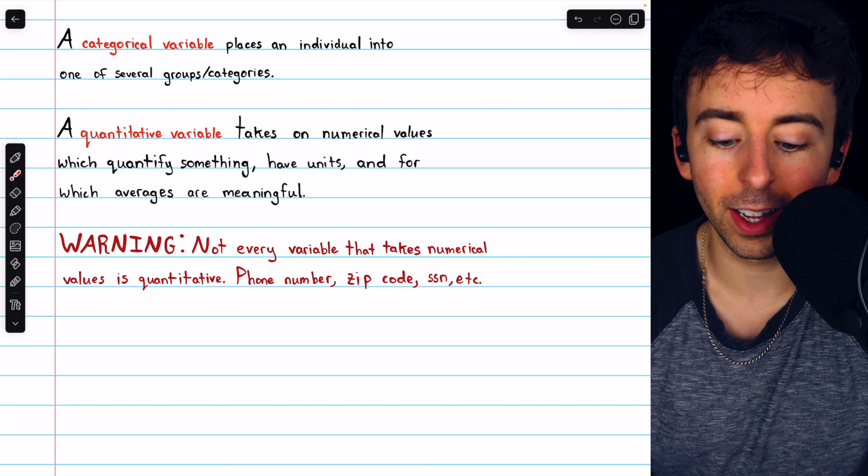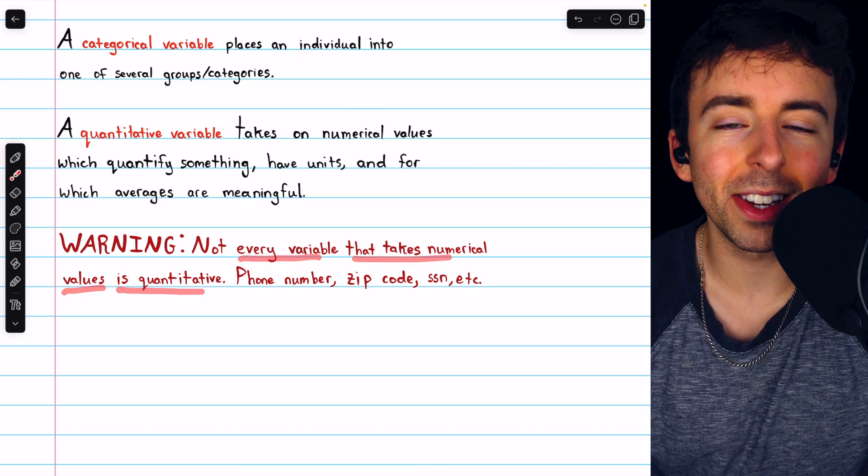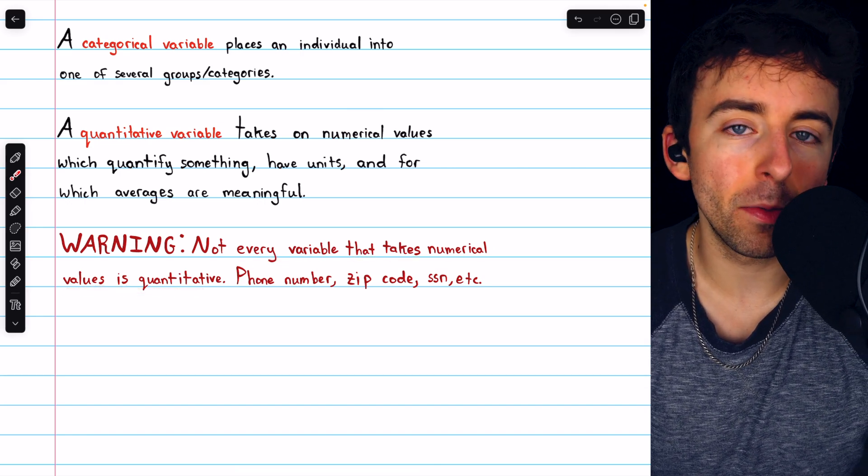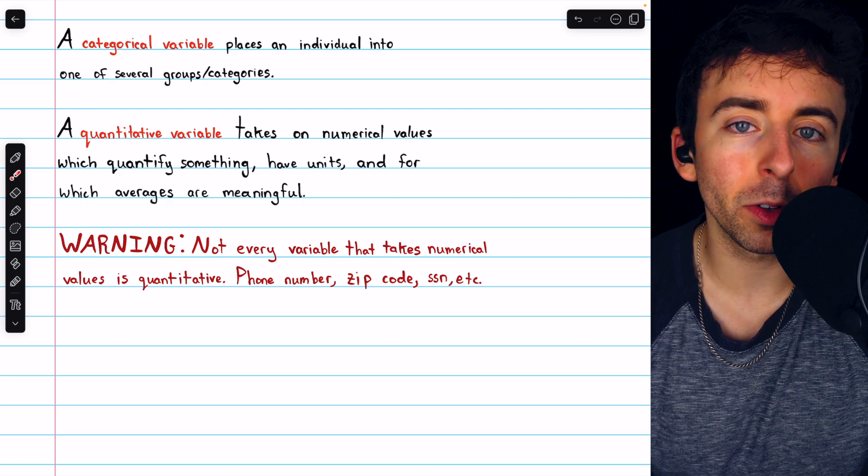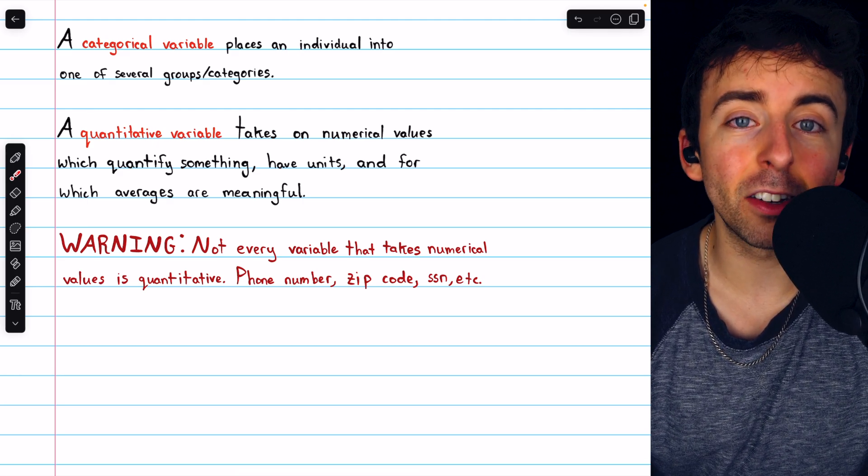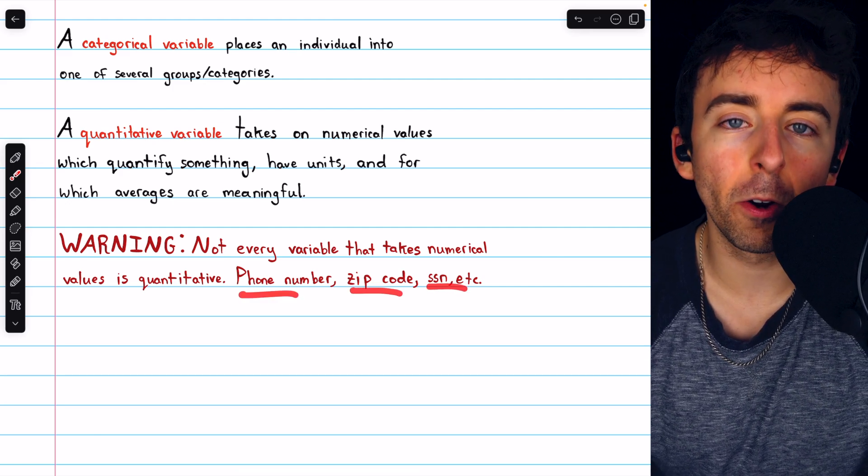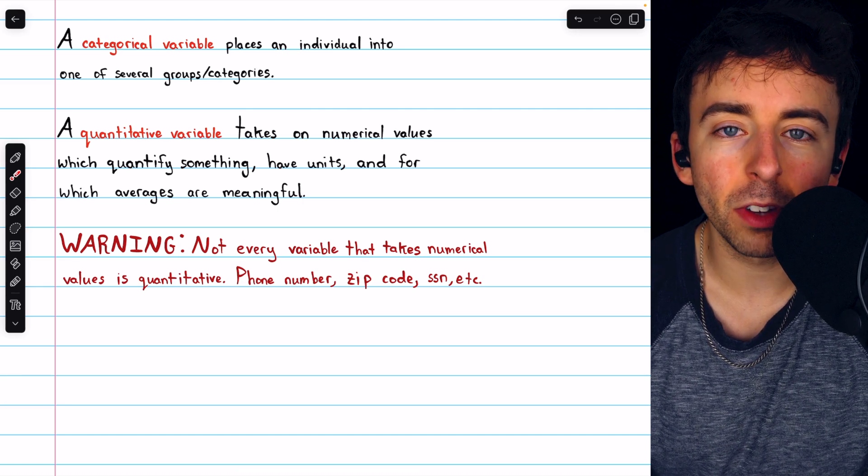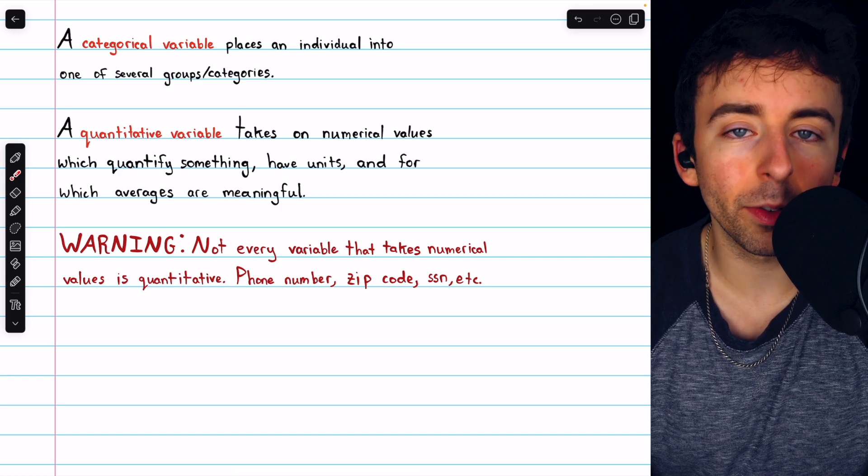One word of warning is that not every variable that takes numerical values is quantitative. A quantitative variable definitely needs to take on numerical values, but just because a variable does take on numerical values doesn't mean it has to be quantitative. For example, phone numbers, zip codes, social security numbers, this is all data that takes on numerical values, but they're not quantitative variables. They're not actually quantifying anything.